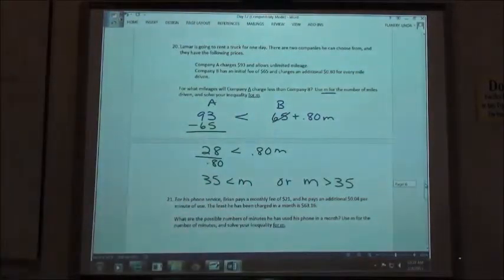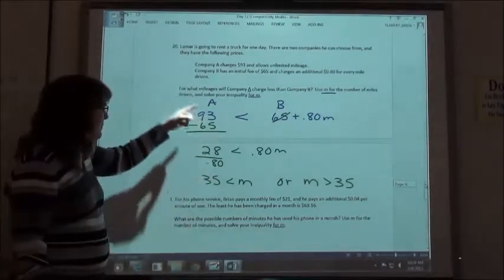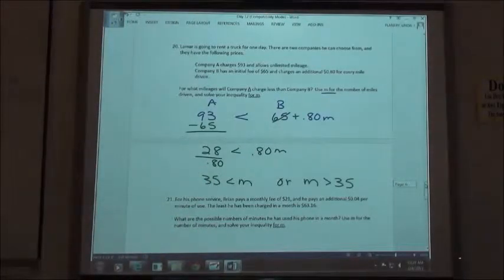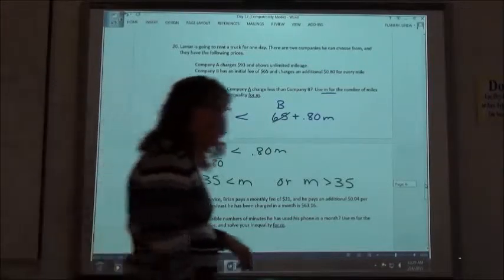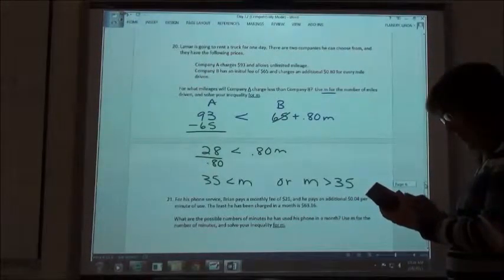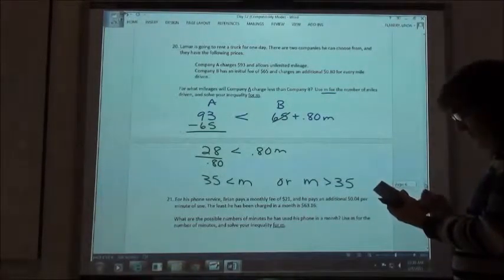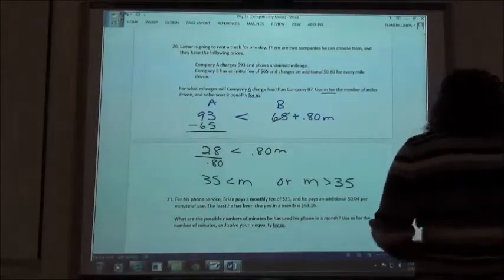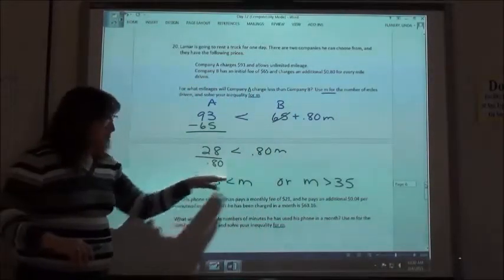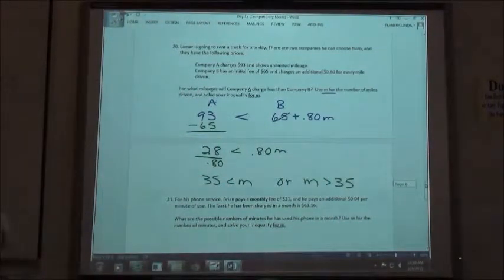Does that make sense? M is greater than 35. So you can leave it either in this order like it is, or if you want, you can switch it around so your variable is first. It shouldn't make any difference when they're done.